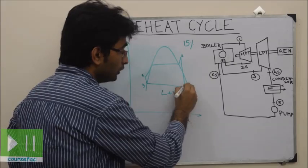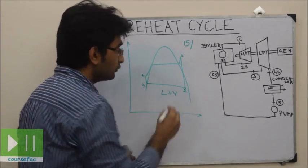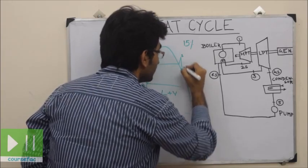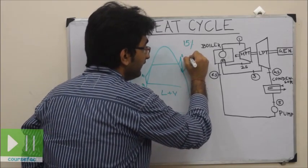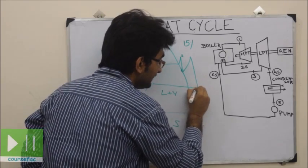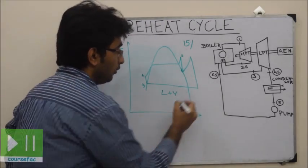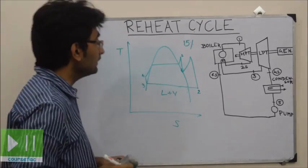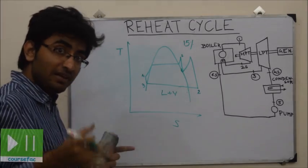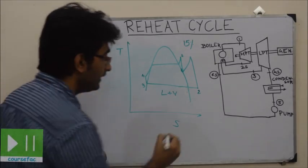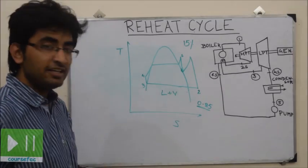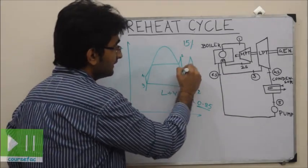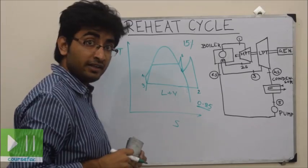Point 2 should lie outside the saturated vapor line, and this could be done by reheating. If we reheat, the line moves such that it lies within the saturated vapor region. The dryness fraction — that is, the moisture content — should be less than 15%, meaning the dryness fraction should be 0.85. Dryness fraction is the amount of vapor in the mixture of liquid and vapor. With reheating, the problem of excess moisture content can be overcome.